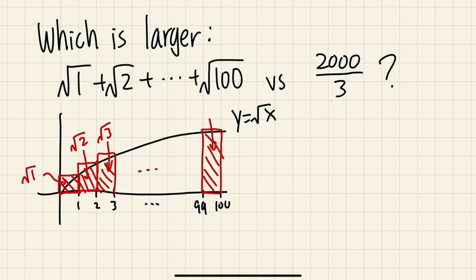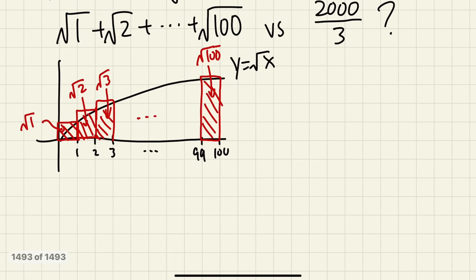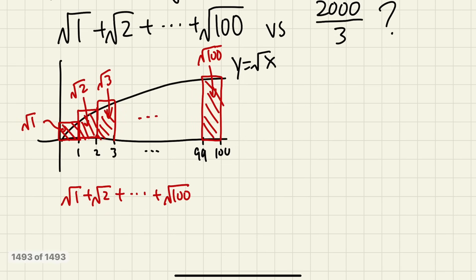This is the area, and that's exactly square root of 100. So as you can see, based on this argument, if we add up all the rectangles—square root of one plus square root of two—these are its area, right?